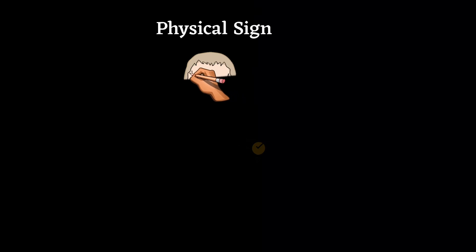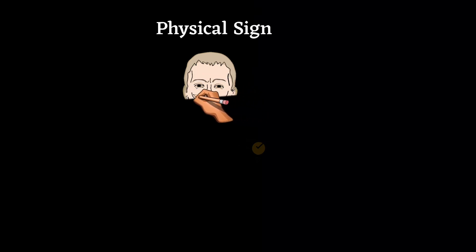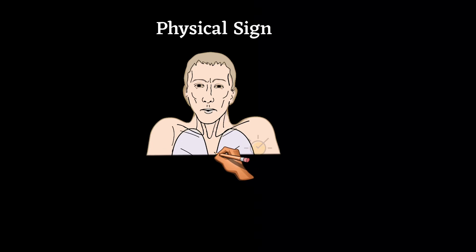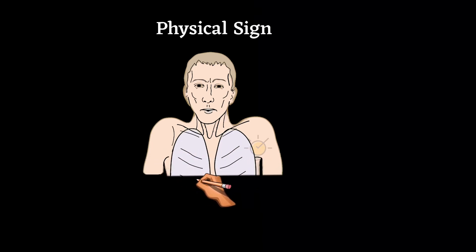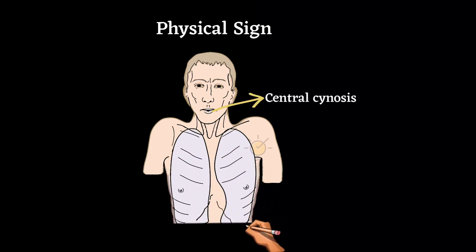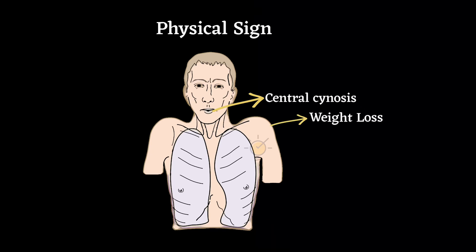Physical signs are non-specific, correlate poorly with lung function, and are seldom obvious until the disease is advanced. Generally, the patient may have central cyanosis, especially in chronic bronchitis due to hypoxia, weight loss especially in emphysema because of loss of appetite and tumor necrosis factor (TNF).